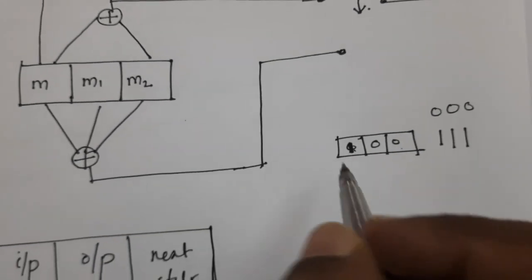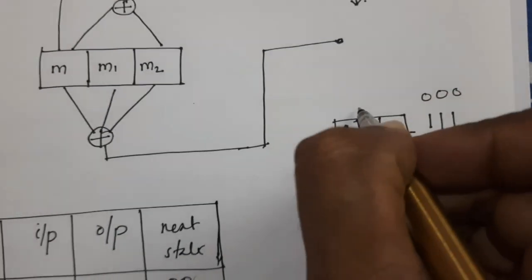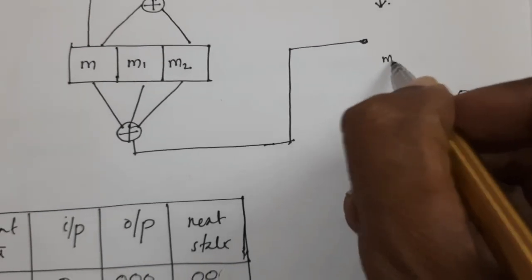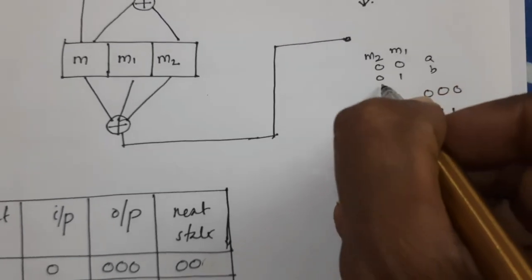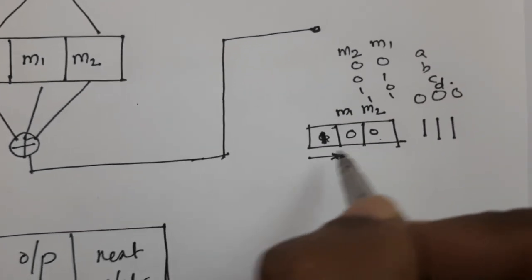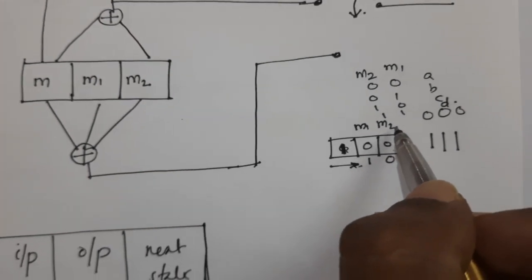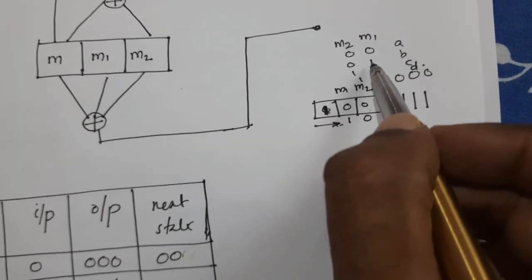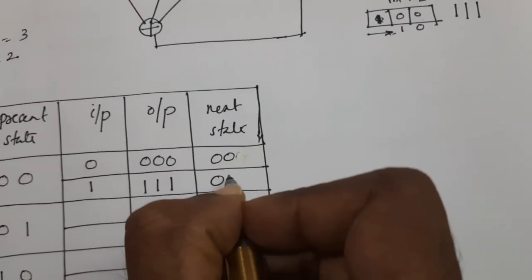The next state is found by shifting: M1 becomes 1 and M2 becomes 0. The state of the encoder is designated as M2, M1. States are: 00=A, 01=B, 10=C, 11=D. When input is 1 from state 00, M2 equals 0 and M1 equals 1, so the next state is B (01).